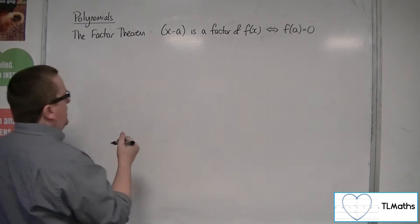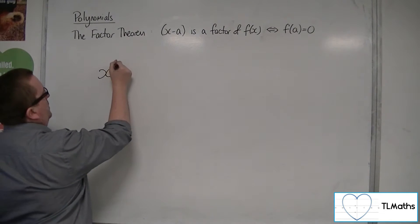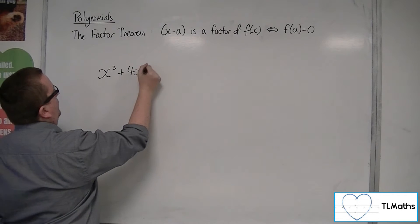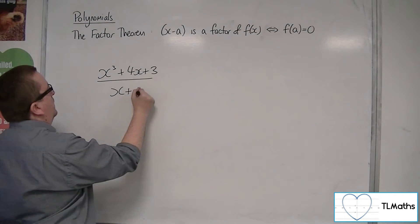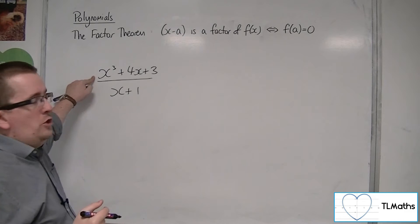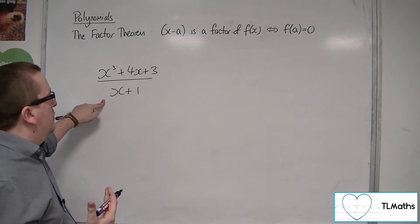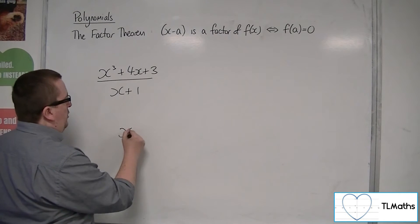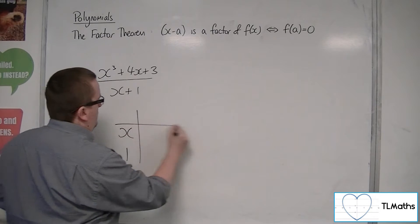So we're just going to do x cubed plus 4x plus 3 over x plus 1. So we're going to divide this cubic by this linear function. So we're going to just use polynomial division in the grid method.